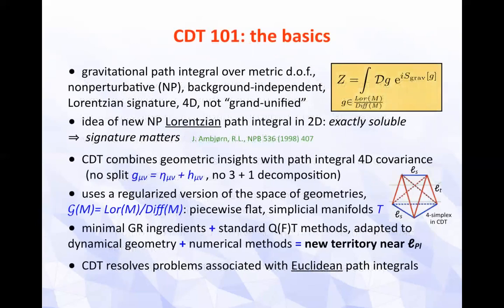I'm not assuming that you're familiar with CDT as an approach to quantum gravity, so let me illustrate some of the basics. We are talking about an implementation of the gravitational path integral over metric degrees of freedom — the metric G, or equivalence classes of metrics. The approach is not perturbative, so it doesn't rely on a split into background plus perturbation, and there's no distinguished background either. It's in Lorentzian signature, in 4D.